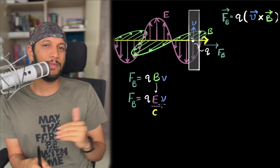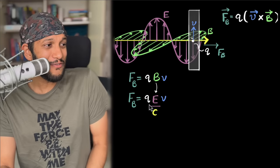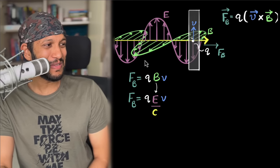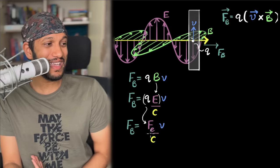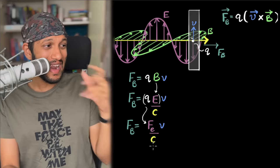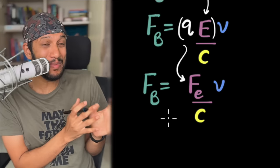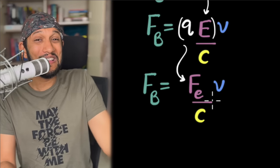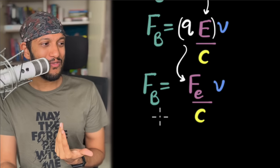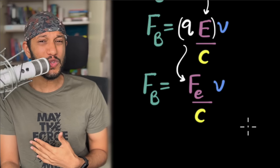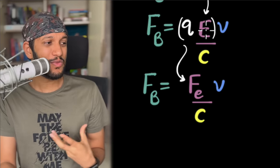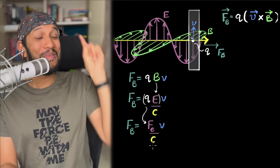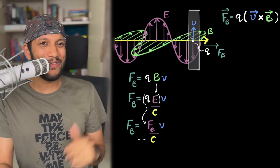Looking at the equation carefully, we see qE — which is the strength of the electric force acting on the electron. So the magnetic force simplifies to: magnetic force = electric force × v/c. This is a beautiful equation. It shows both magnetic and electric forces in one expression. It also shows why the magnetic force is so much smaller than the electric force — because of the large denominator c. That's one reason magnetic forces are usually ignored in electromagnetic waves, yet when it comes to momentum, the magnetic field makes a comeback.